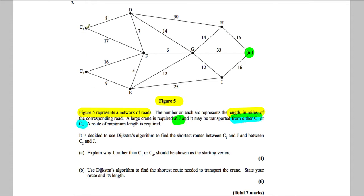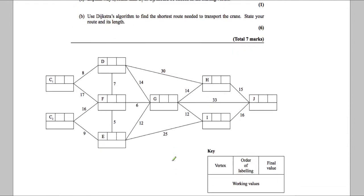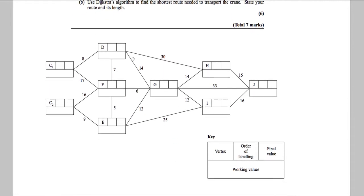A route of minimum length is required. It is decided to use Dijkstra's algorithm to find the shortest routes between C1 and J and between C2 and J. Explain why J rather than C1 or C2 should be chosen as the starting vertex.